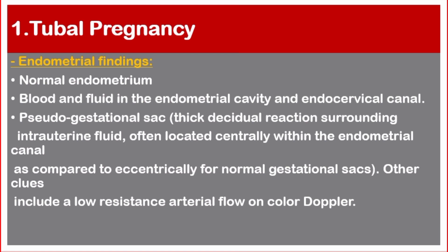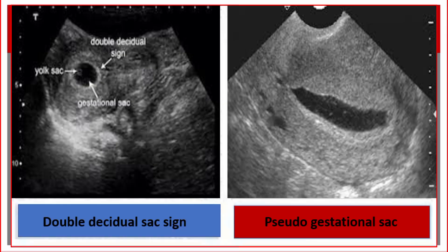Endometrial findings include either normal endometrium, blood and fluid in the endometrial cavity and endocervical canal, or a pseudo-gestational sac — a thick decidual reaction surrounding intra-uterine fluid, often located centrally within the endometrial canal, as compared to eccentrically for normal gestational sacs. Other clues include low resistance arterial flow on color Doppler.